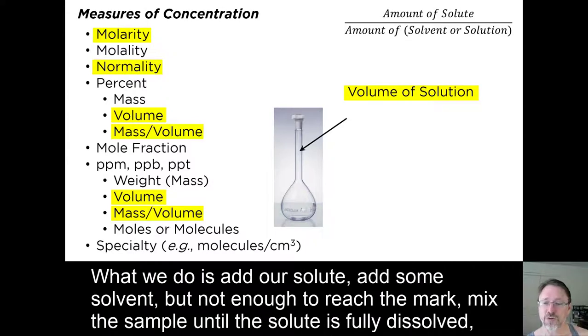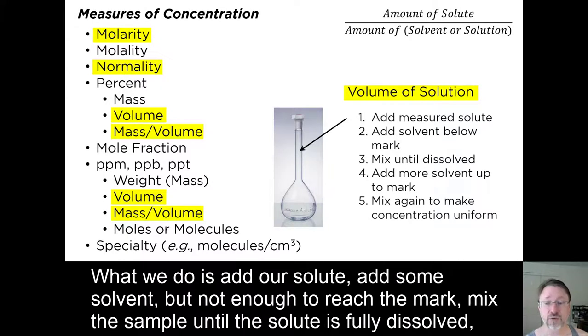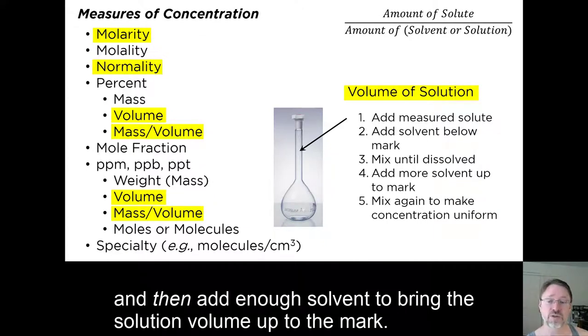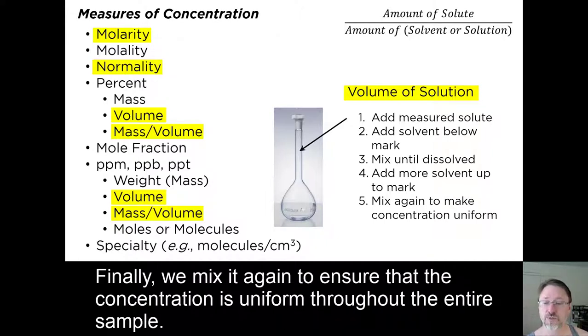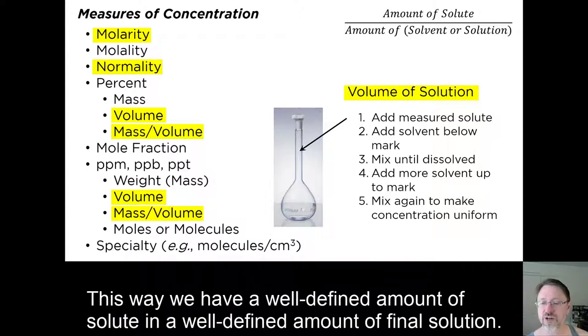What we do is add our solute, add some solvent but not enough to reach the mark, mix the sample until the solute is fully dissolved, and then add enough solvent to bring the solution volume up to the mark. Finally, we mix it again to ensure that the concentration is uniform throughout the entire sample. This way, we have a well-defined amount of solute and a well-defined amount of final solution.